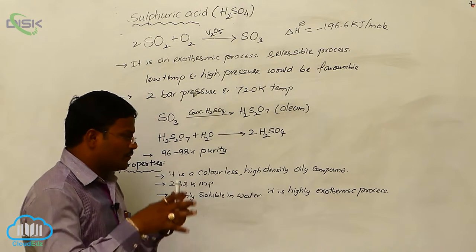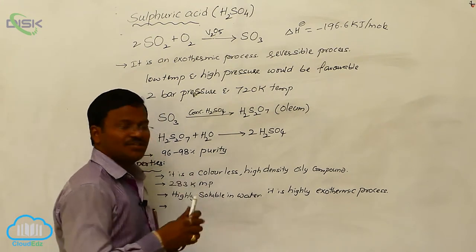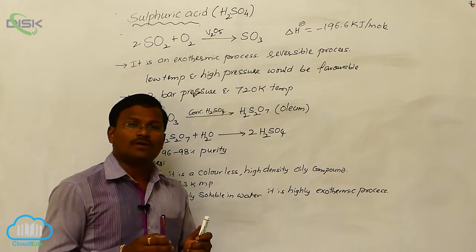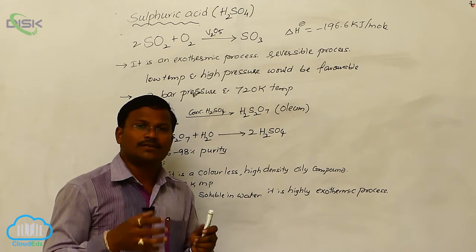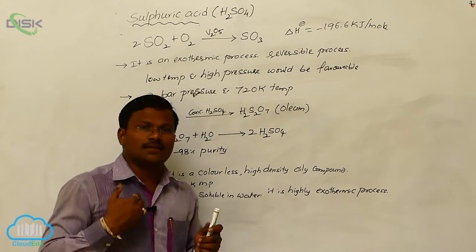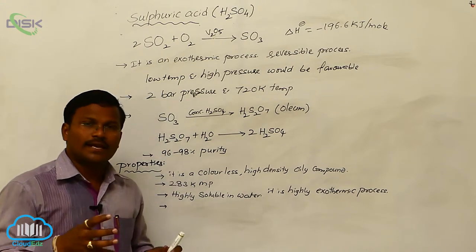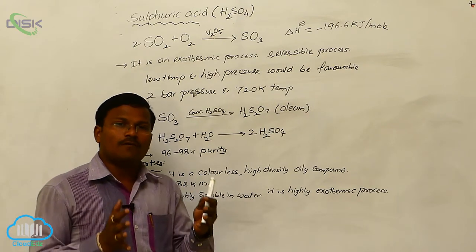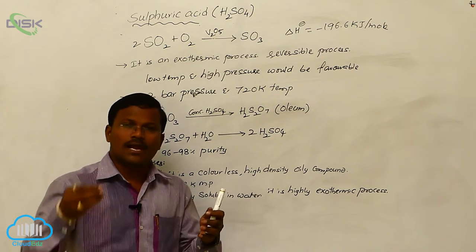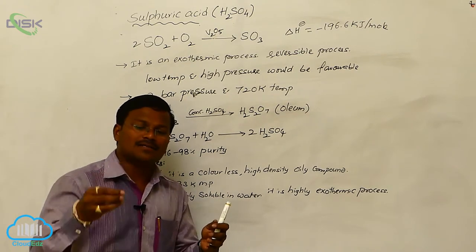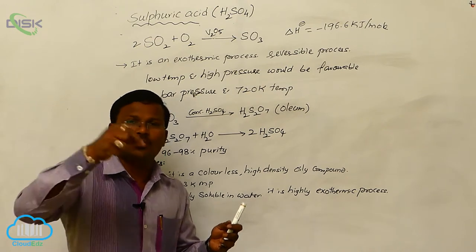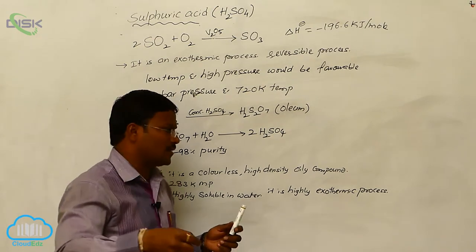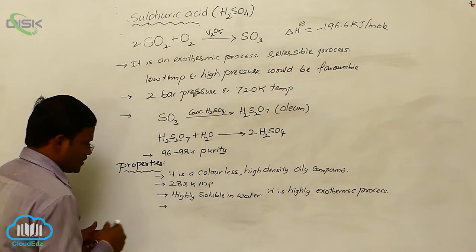Under laboratory conditions, to convert concentrated sulfuric acid into a desired concentration, we must take a large amount of water first. Then we add concentrated sulfuric acid slowly with a constant stream to the water.